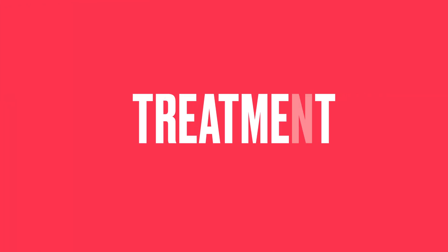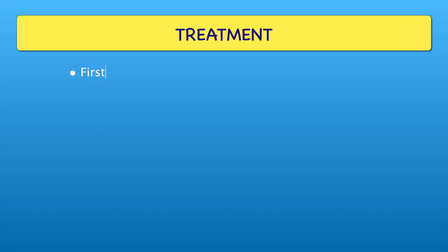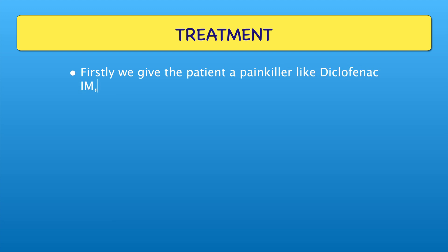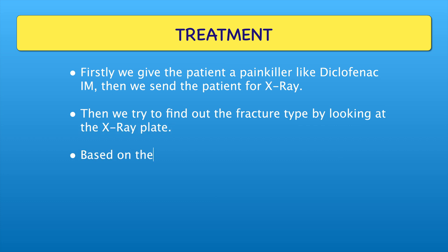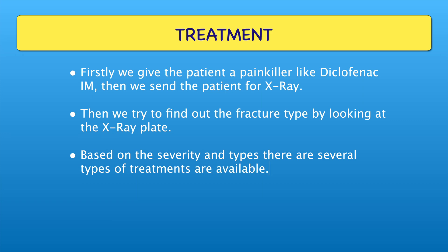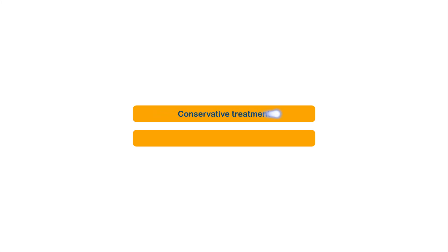Now let's discuss the treatment part. Firstly we give the patient a painkiller like diclofenac IM, then we send the patient for X-ray. We then try to find out the fracture type by looking at the X-ray plate. Based on the severity and types, several treatments are available. Mainly two types of treatment are done: conservative and surgical treatment.